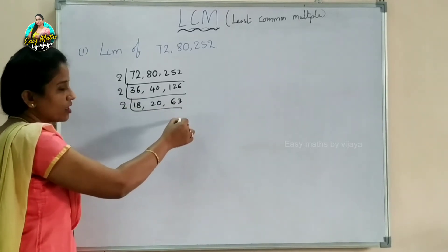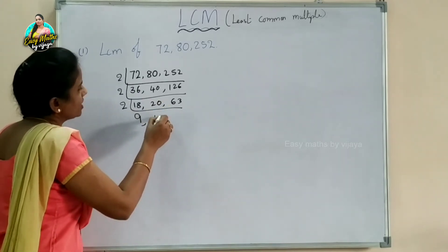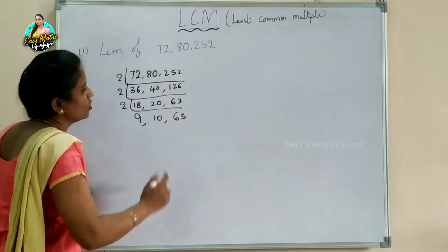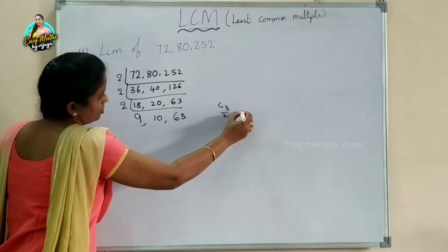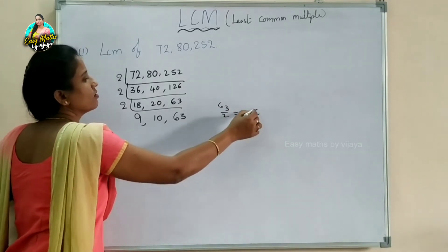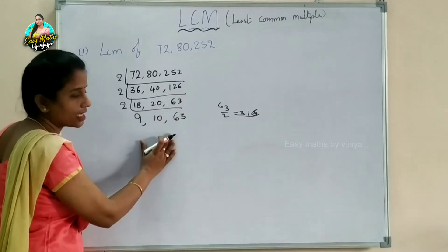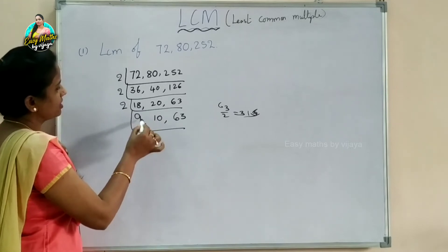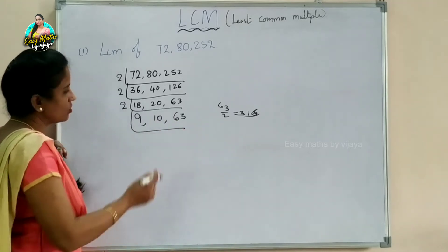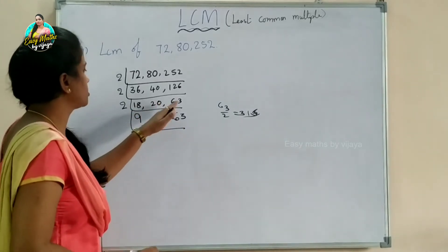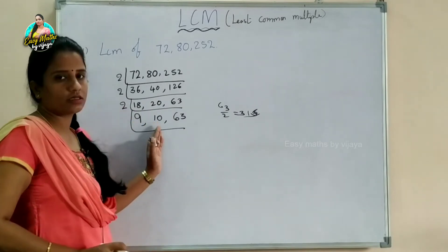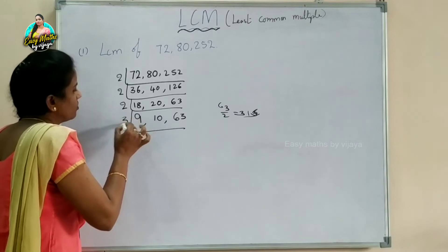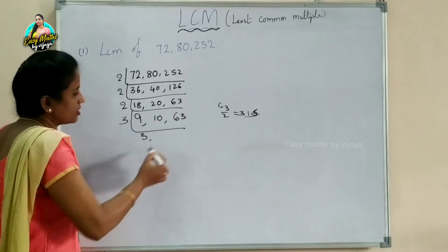Continuing, 2 divides 18 to get 9, 20 to get 10, and 63 doesn't divide by 2, so we keep it as 63. Now we have 9, 10, and 63. Since these don't all divide by 2, we try 3.